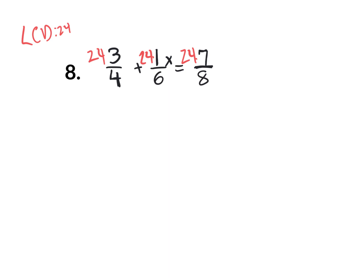I'm going to get you started. You could go 24 times 3 and get a big number, then divide by 4. But it's easier to divide first and then multiply. 24 divided by 4 is 6, and 6 times 3 is 18 — so no more fraction. It's not three-fourths anymore; it's a beautiful 18. For the next term: 24 divided by 6 is 4, and 4 times 1x is 4x. Continue applying the same process to the right side and keep solving.